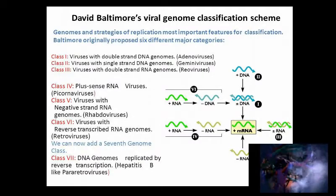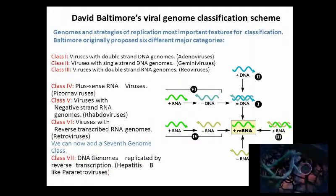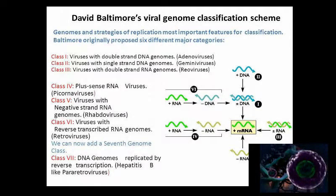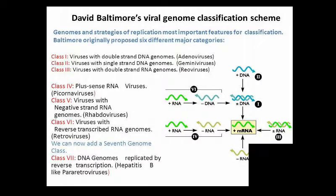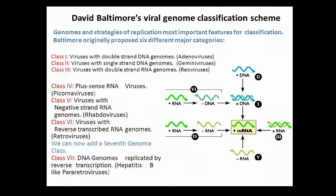Group 6: Positive-sense single-strand RNA reverse transcriptase viruses, which have a DNA intermediate in their life cycle — example: retroviruses.